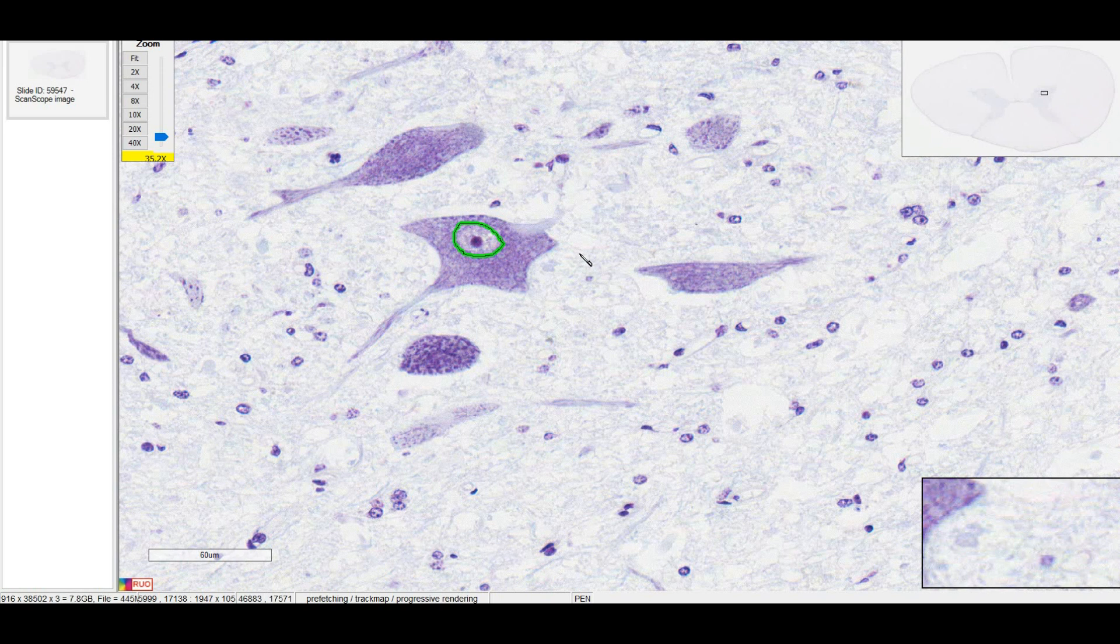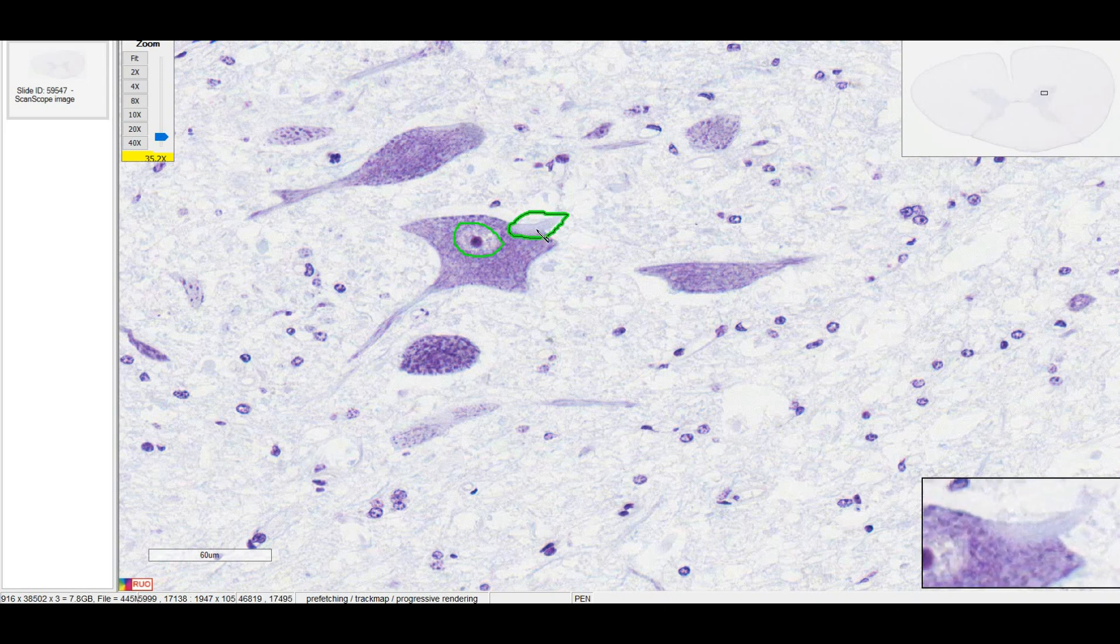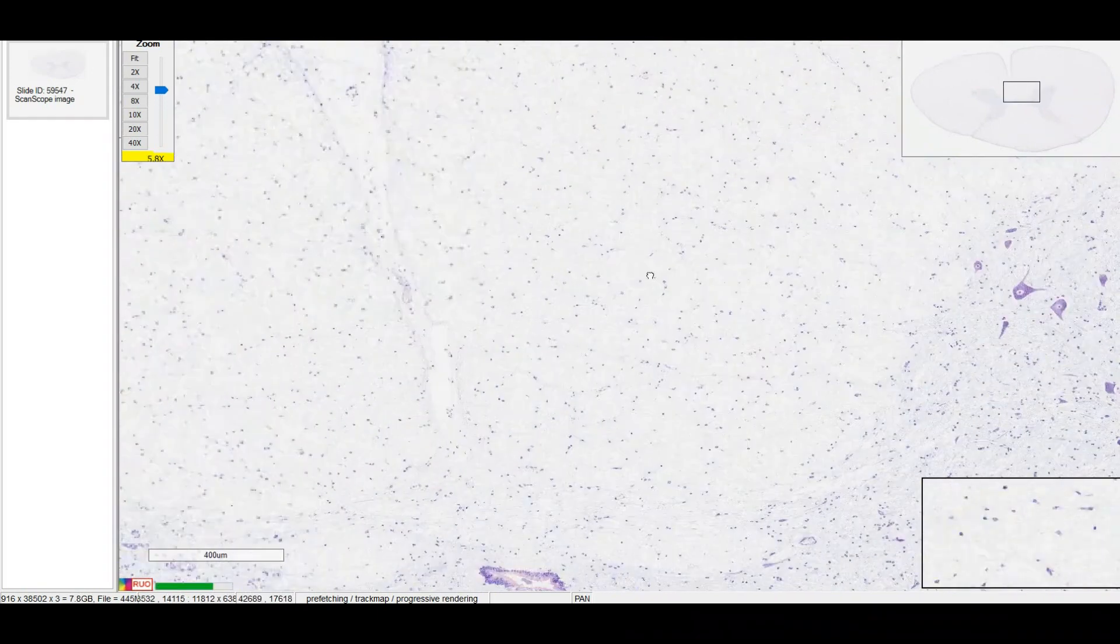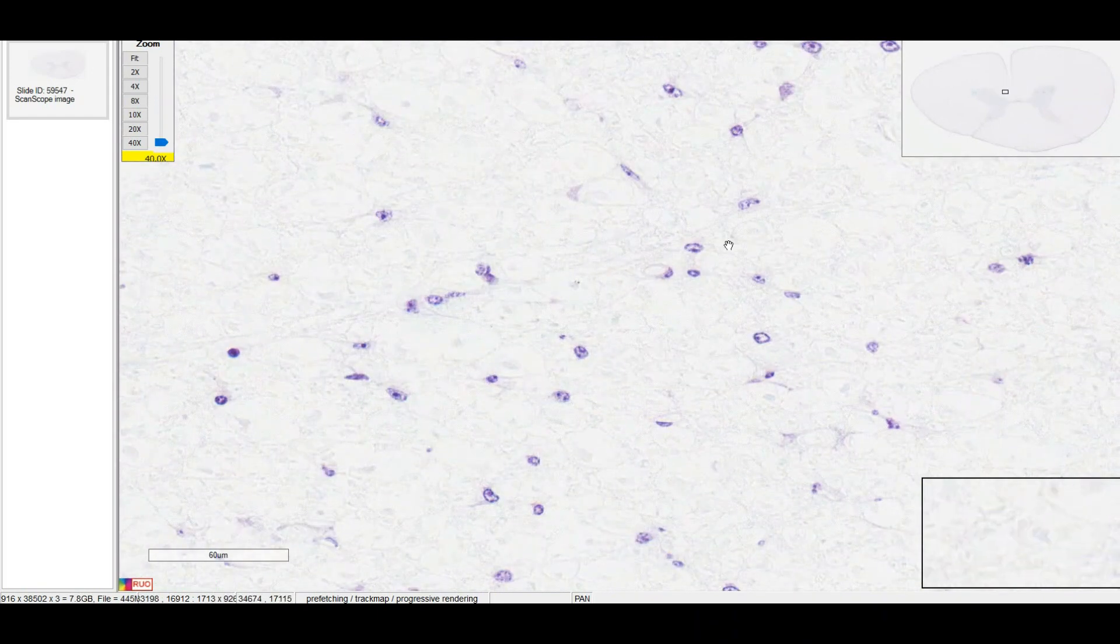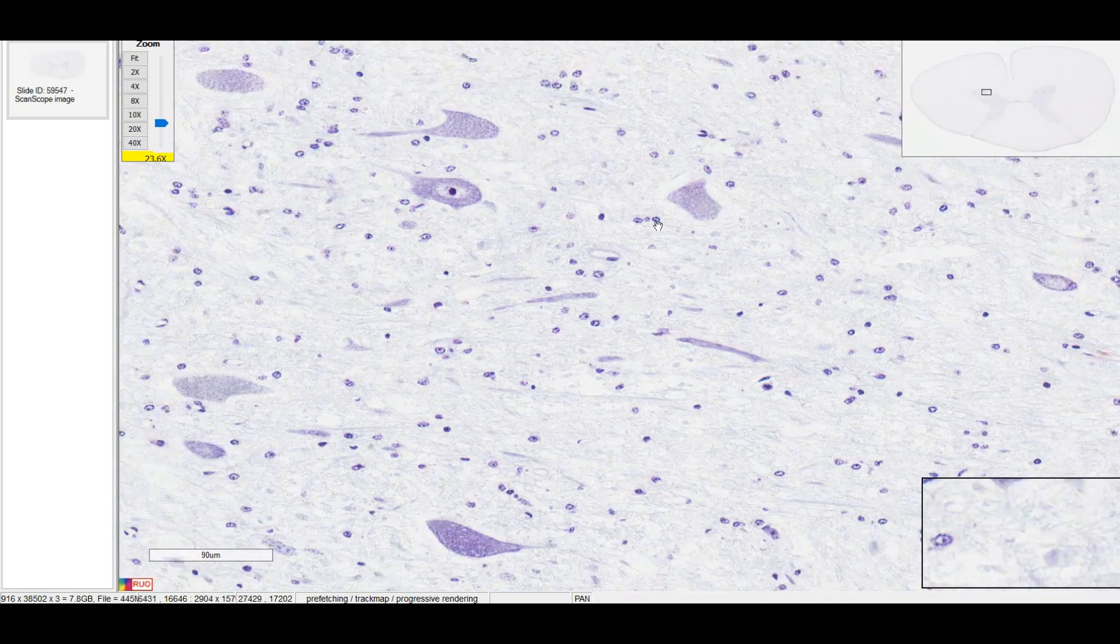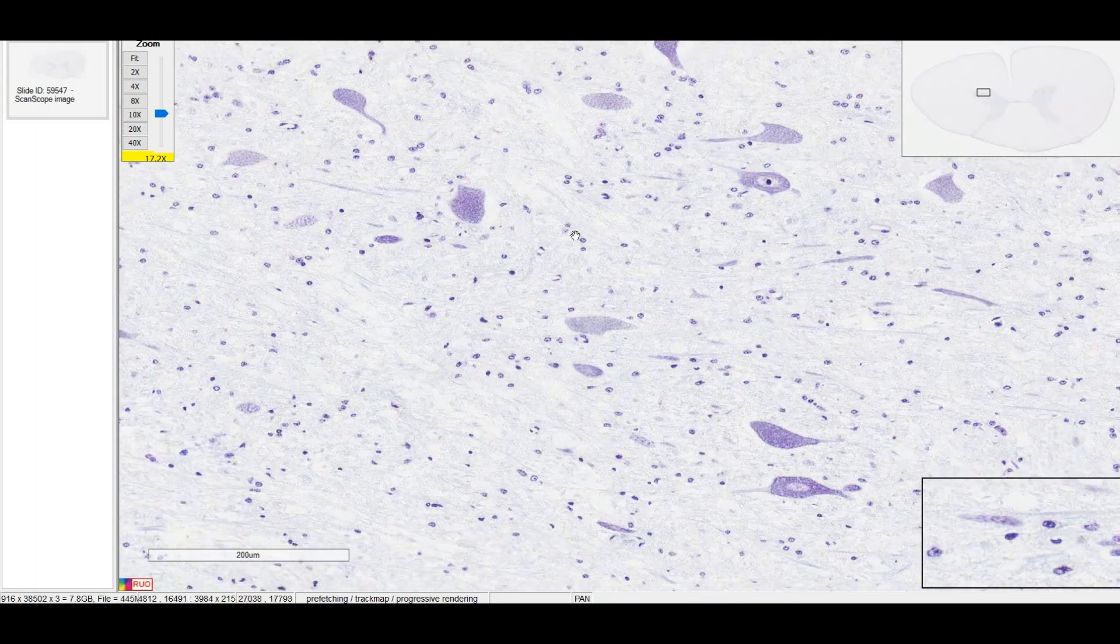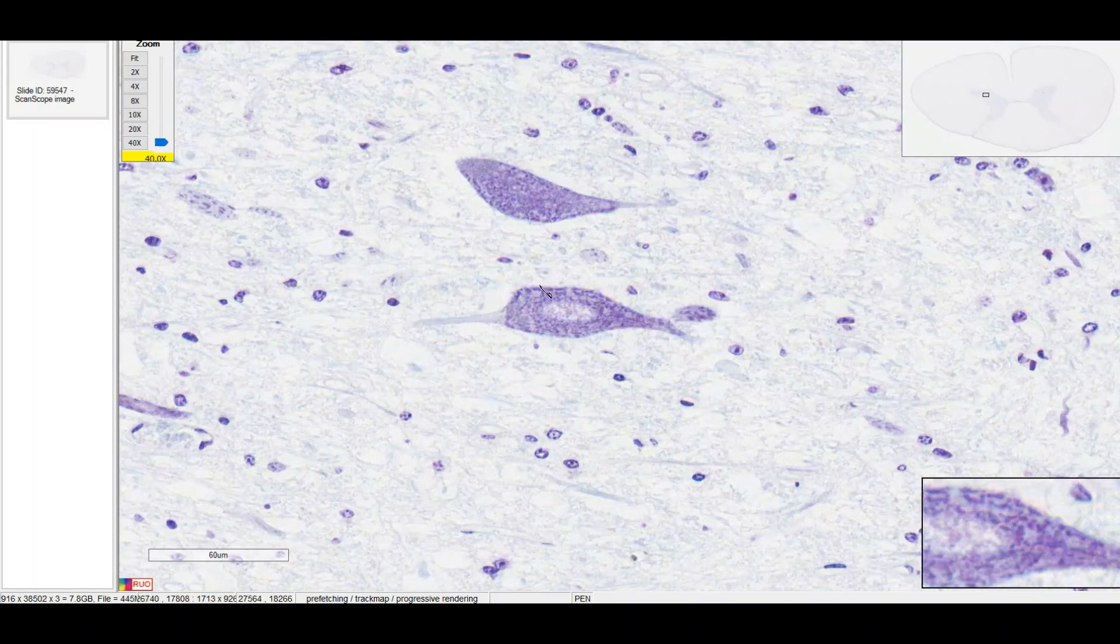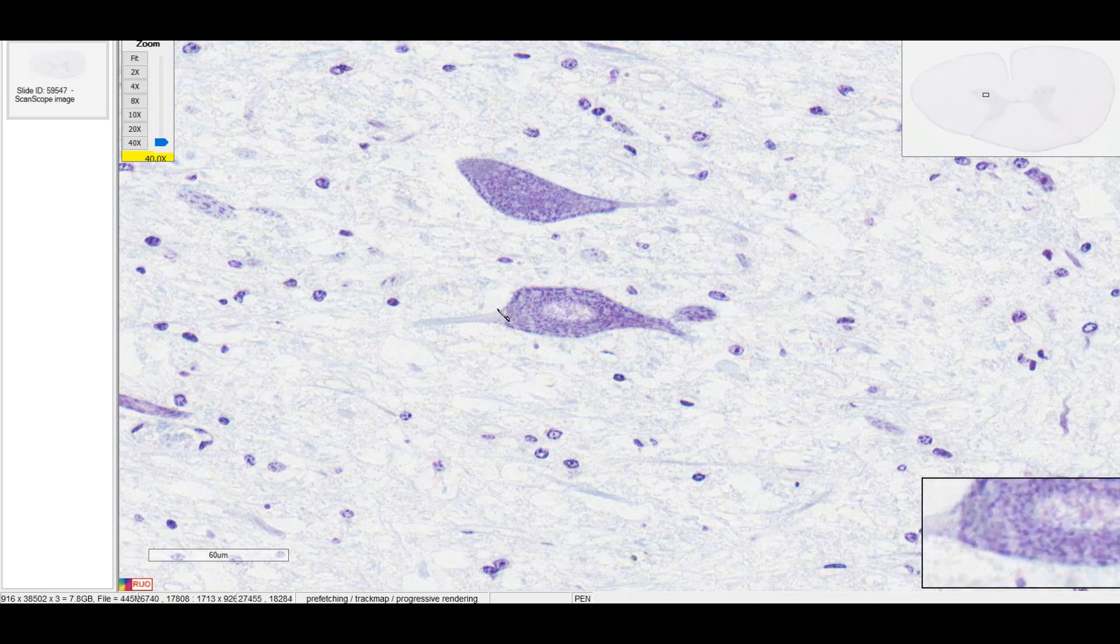The lab manual asks us to look for some axon hillocks. In order to find that, you're looking for an extension from the neural cell body that is absent of Nissel substance. And I believe I found another one on the other side. Looks like it's right here. Here's your neuronal cell body with the nucleus in the middle, and this looks like an axon hillock.